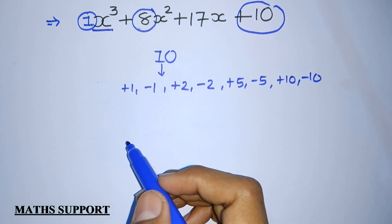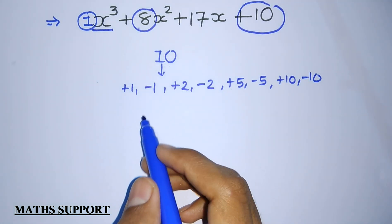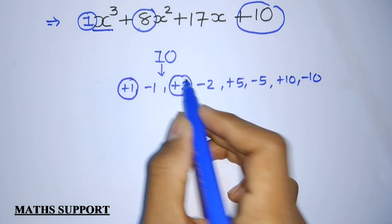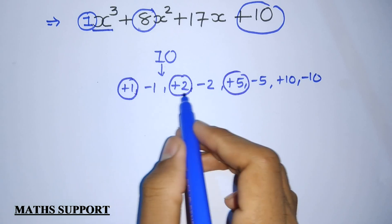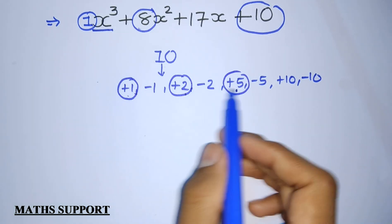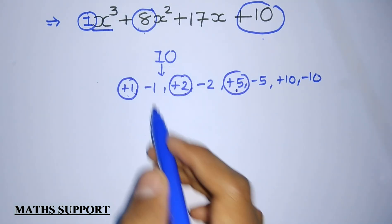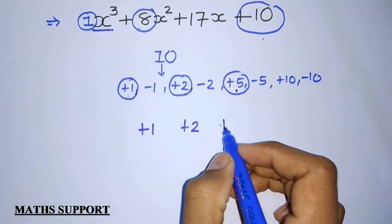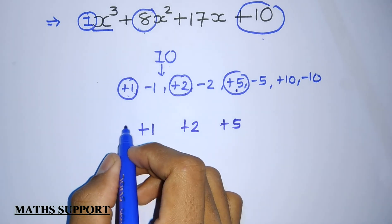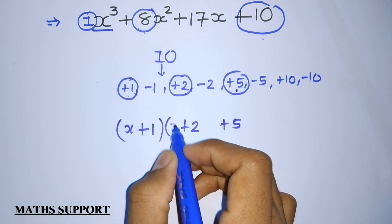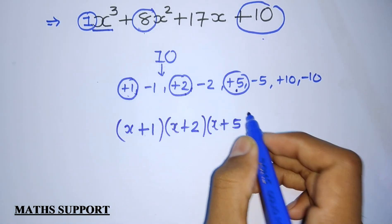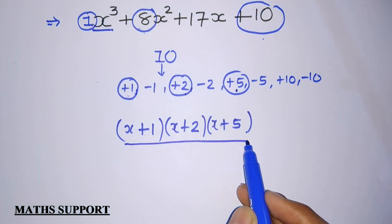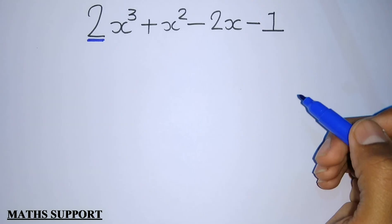Since both the addition and multiplication values are positive, we need to select all three values as positive, so we concentrate on only the positive values. Plus 1, plus 2, and plus 5 give addition 8 and multiplication 10. We put these values with variable x in front, so the factorized form is (x + 1)(x + 2)(x + 5).